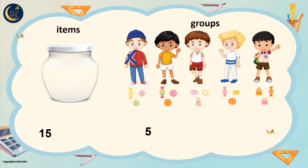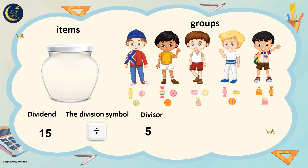Let's write the division sentence together. We write the dividend: how many pieces of candy? Fifteen. Then the division symbol. Then the divisor: how many children? Five. Let's read the division sentence: fifteen divided by five. How many pieces did each child take? Three. So fifteen divided by five equals three.